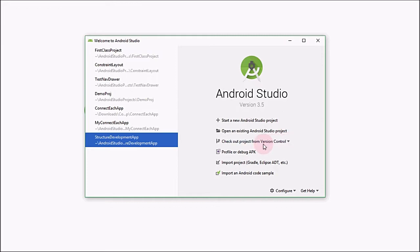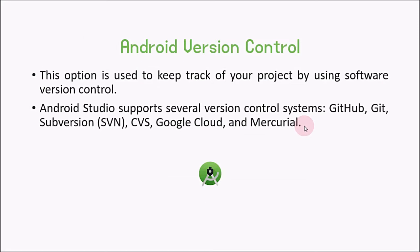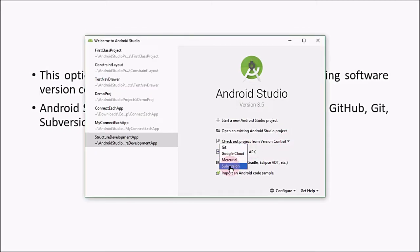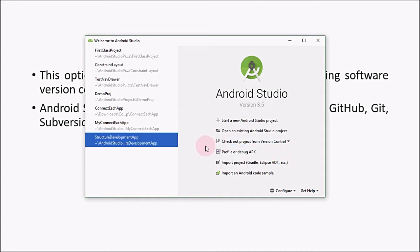The next thing is version control. This option is used to keep track of your software versions. Android Studio supports several kinds of version controls such as GitHub, SVN, CVS, and Google Cloud to keep track of different versions of your Android project. You can check one of these options if you want to set up version control for your application. I will explain how to do that in coming videos.